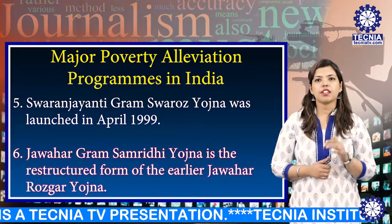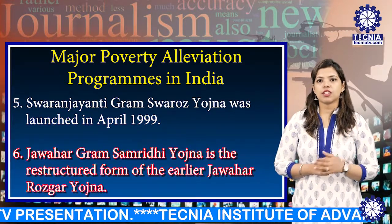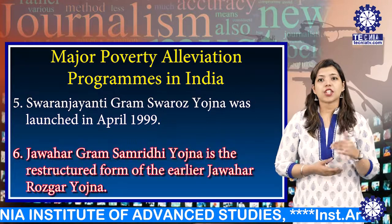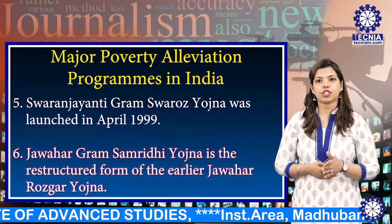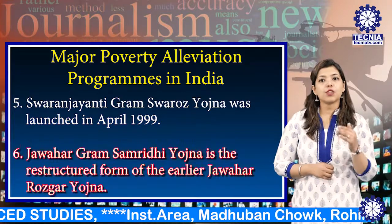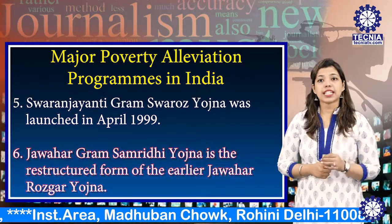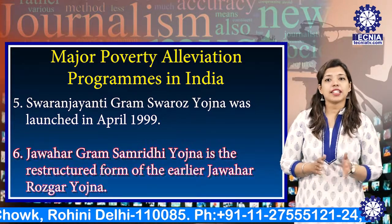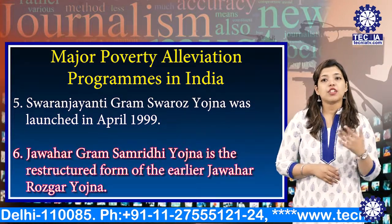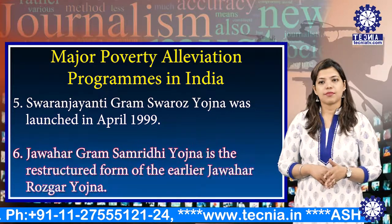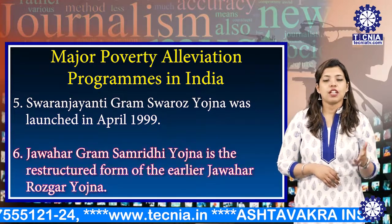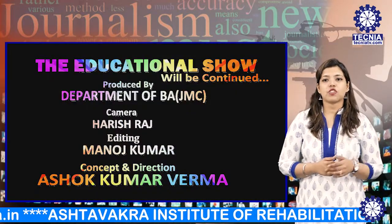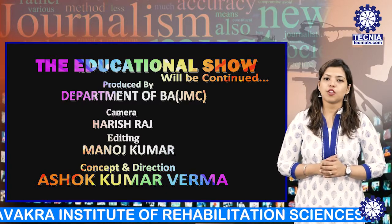The sixth program, Jawahar Gram Samridhi Yojana, is the restructured form of the earlier Jawahar Rozgar Yojana. It aims at generating additional employment opportunities for the unemployed poor in the rural sector. Wage employment is limited to those below the poverty line. The scheme aims at creating village infrastructure and durable assets at the village level, such that additional opportunities for sustained employment are generated. That's all from my side. I hope this lecture will help you understand this topic. Thank you very much.